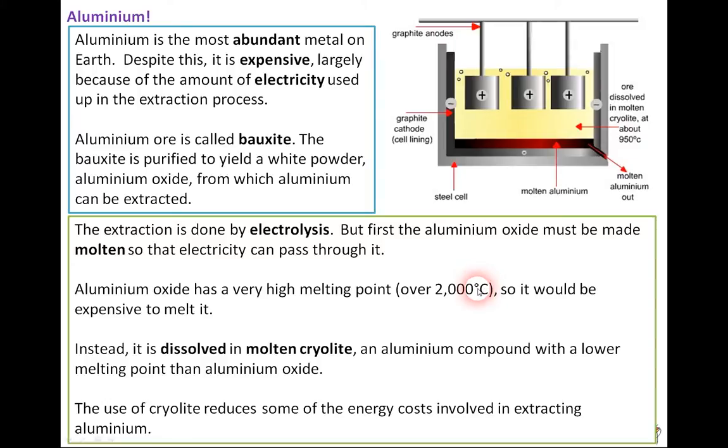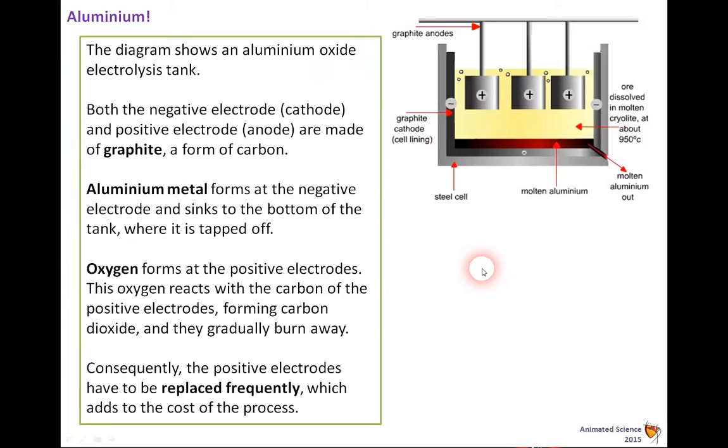So instead it's dissolved in molten cryolite, an aluminium compound with a lower melting point than aluminium oxide. So by putting the cryolite in, we don't need to use as much electricity to melt it, and that reduces some of the energy costs. It's still expensive, but it's not as expensive as it would otherwise be.